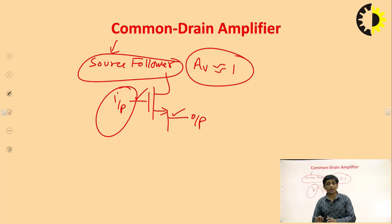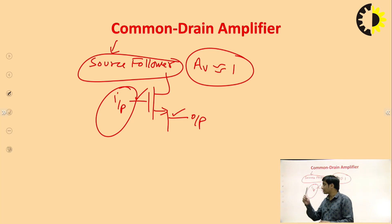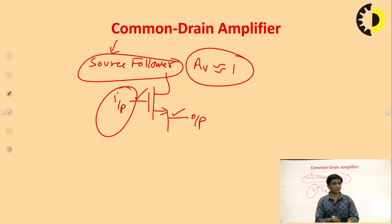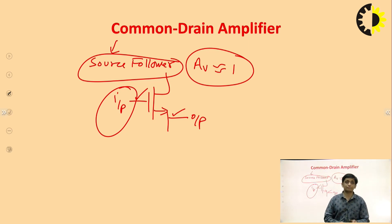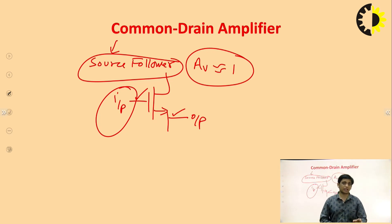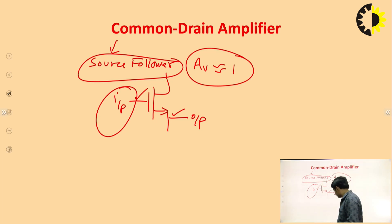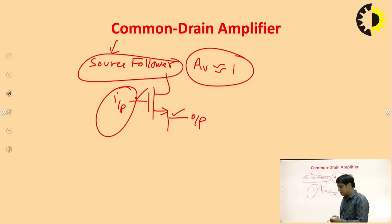If in any application we require lower output resistance, the common drain amplifier is good because the voltage gain remains the same — voltage gain is 1, input voltage equals output voltage, but the output resistance is reduced. That is beneficial in voltage amplifiers. These things I have just discussed briefly.